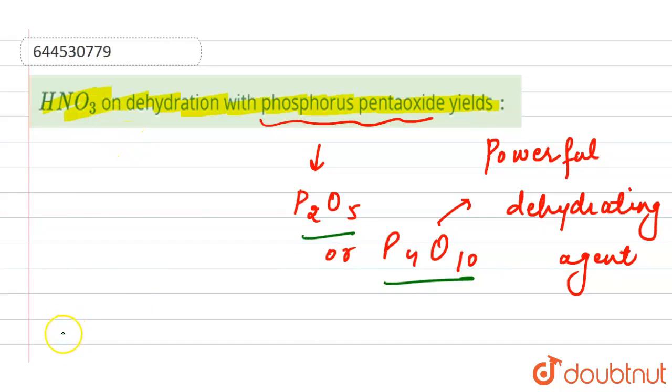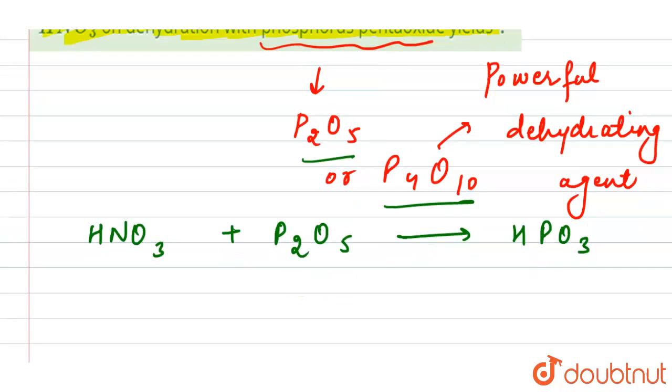So here we have HNO3. If we see the reaction, we have HNO3 plus P2O5 because we have to use phosphorus pentoxide. Here we will have the formation of HPO3 plus N2O5.